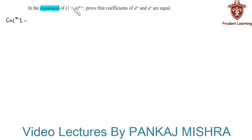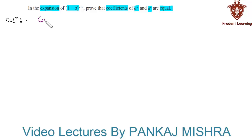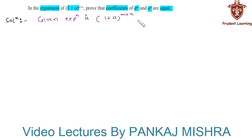In the expansion of (1+a) whole raised to m+n, prove that the coefficients of a raised to m and a raised to n are equal. Let us see the solution for this problem. The given expression is (1+a) whole raised to m+n.